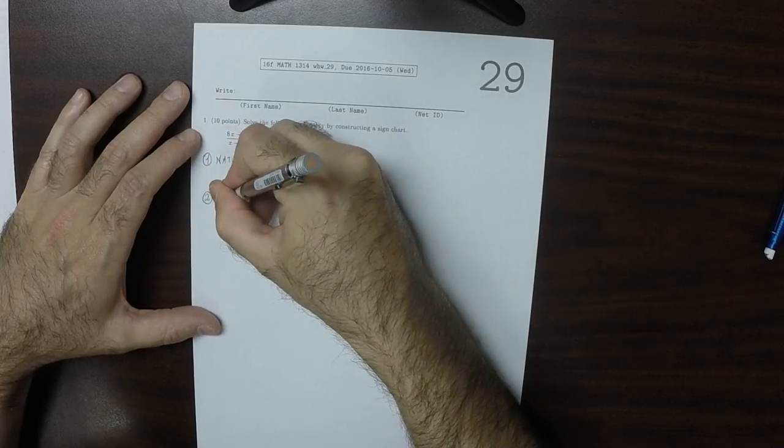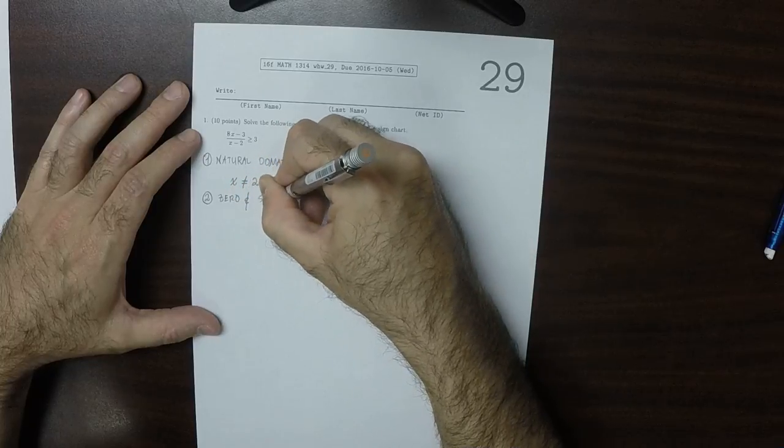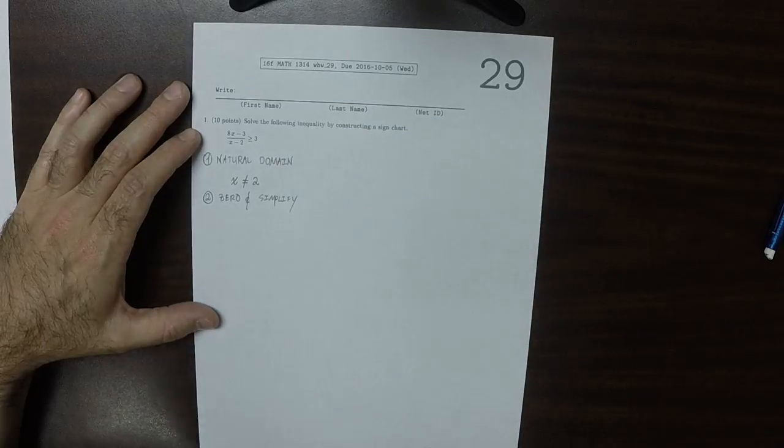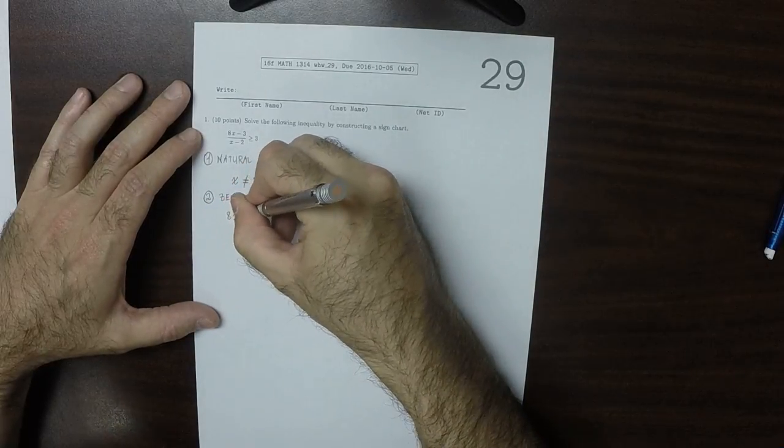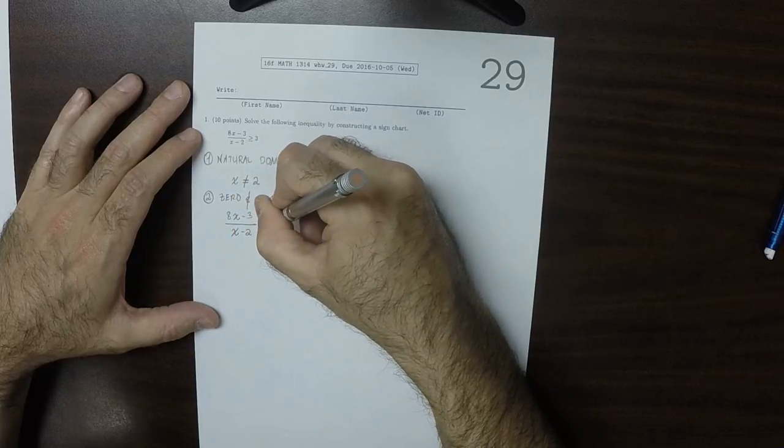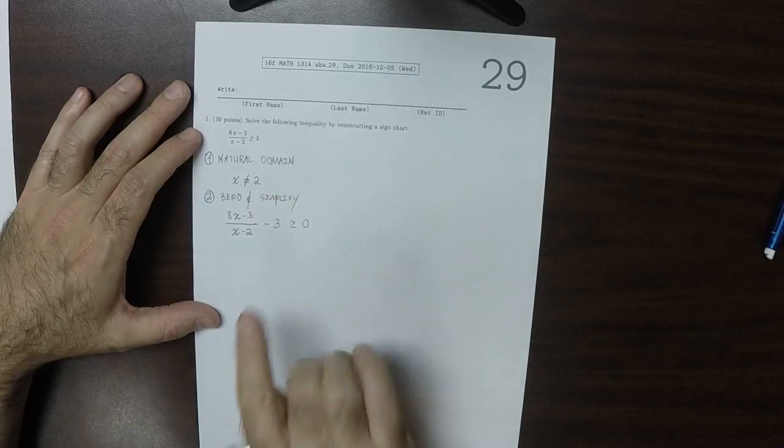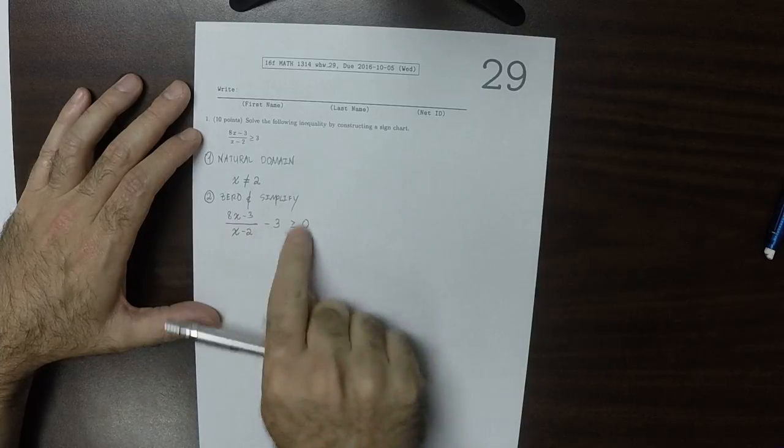So the next step is we're going to zero and simplify this expression. So 8x minus 3 over x minus 2 minus 3 is greater or equal to 0. So we got one of the sides to be 0. Now we want to simplify this.